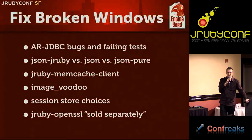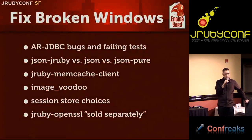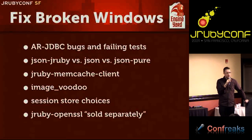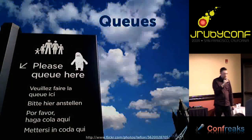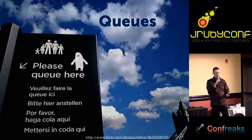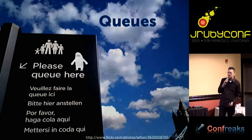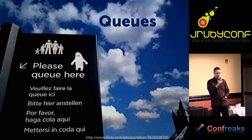We have an OpenSSL gem that's sold separately — it doesn't install with JRuby. We've shied away from bundling it because of uncertainty around crypto export issues, waiting for legal clarity. Queues: I mentioned backgrounding, and I think we really need an out-of-the-box solution. There are things like ActiveMessaging, BJ, DJ, and delayed_job, but I'd like to see one or two standard solutions that we can bless and say 'try this first.'